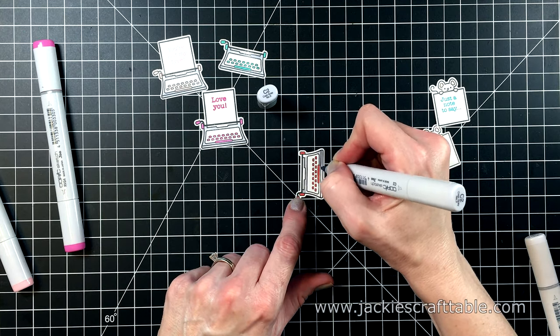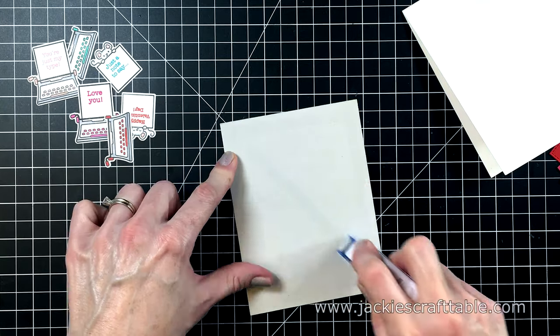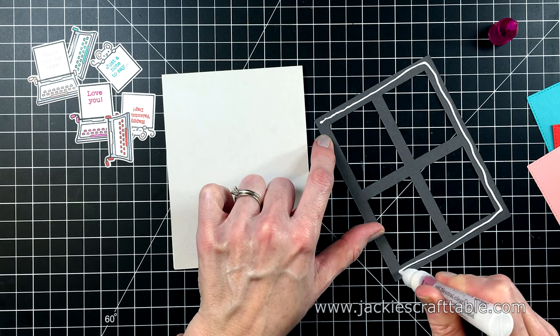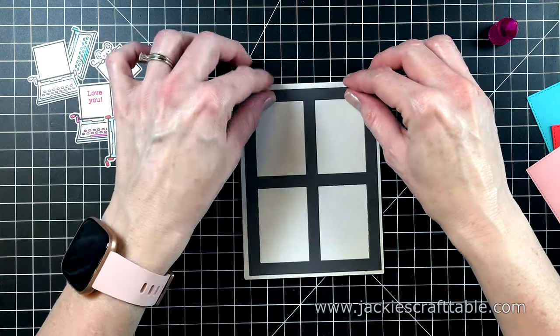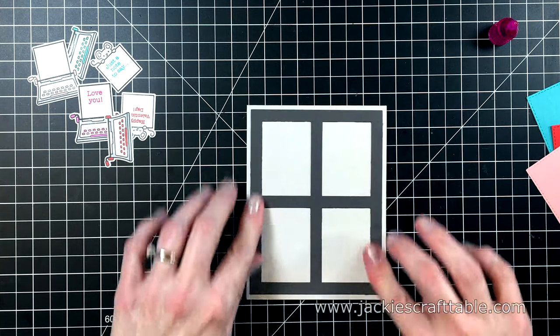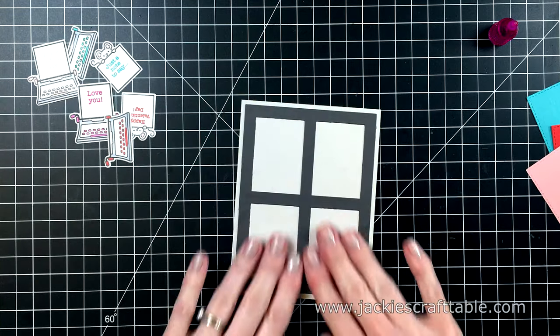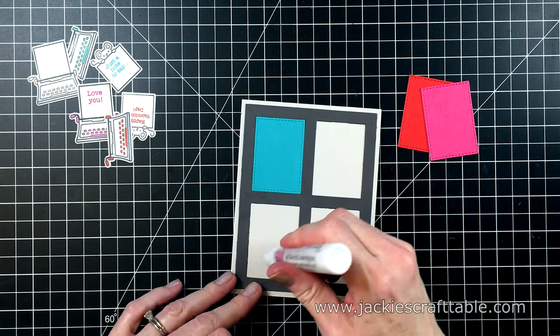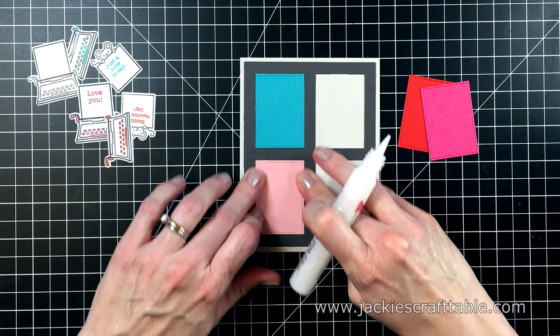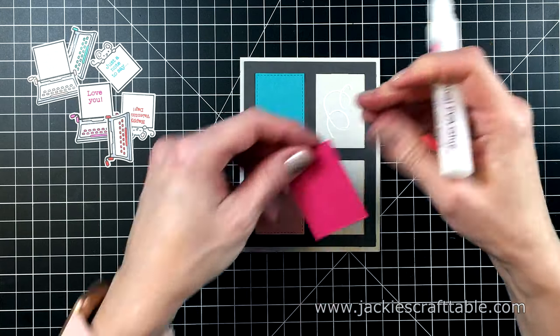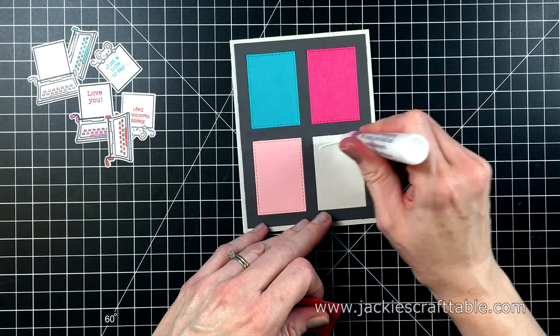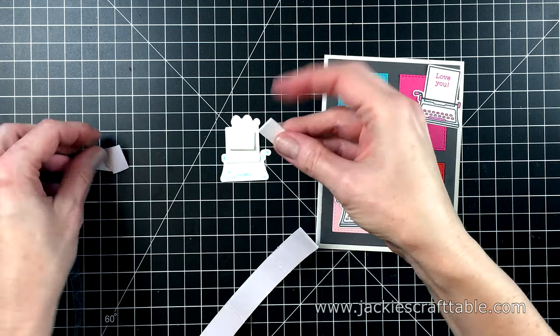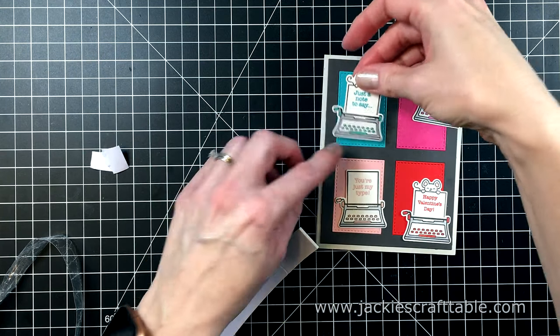I used more Neenah Solar White 80-pound cardstock for these little typewriters. And now to put this card together, I'm using a piece of Gray Fog cardstock and I adhered that down onto a white card base. I also cut out a frame—this is from MFT, it's called a Rectangle Cover-Up die—and I cut that out with a darker gray cardstock. I also cut out several rectangles with different colors of cardstock, and I'm just using some liquid adhesive to glue those in place. I love the little stitched details on these rectangles.